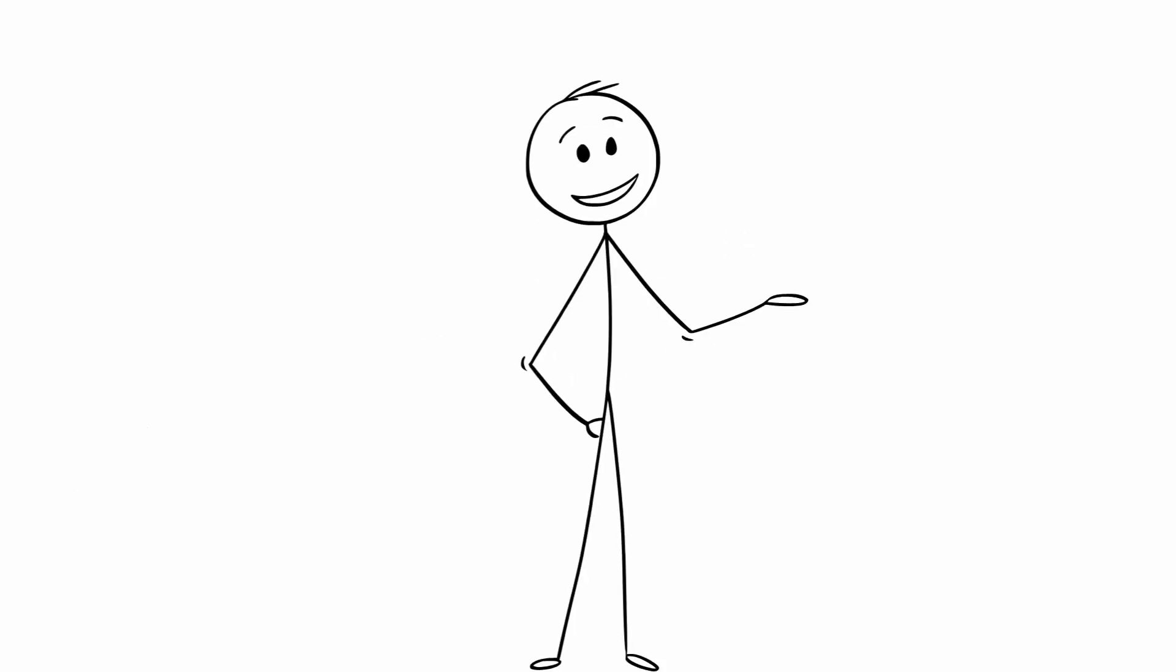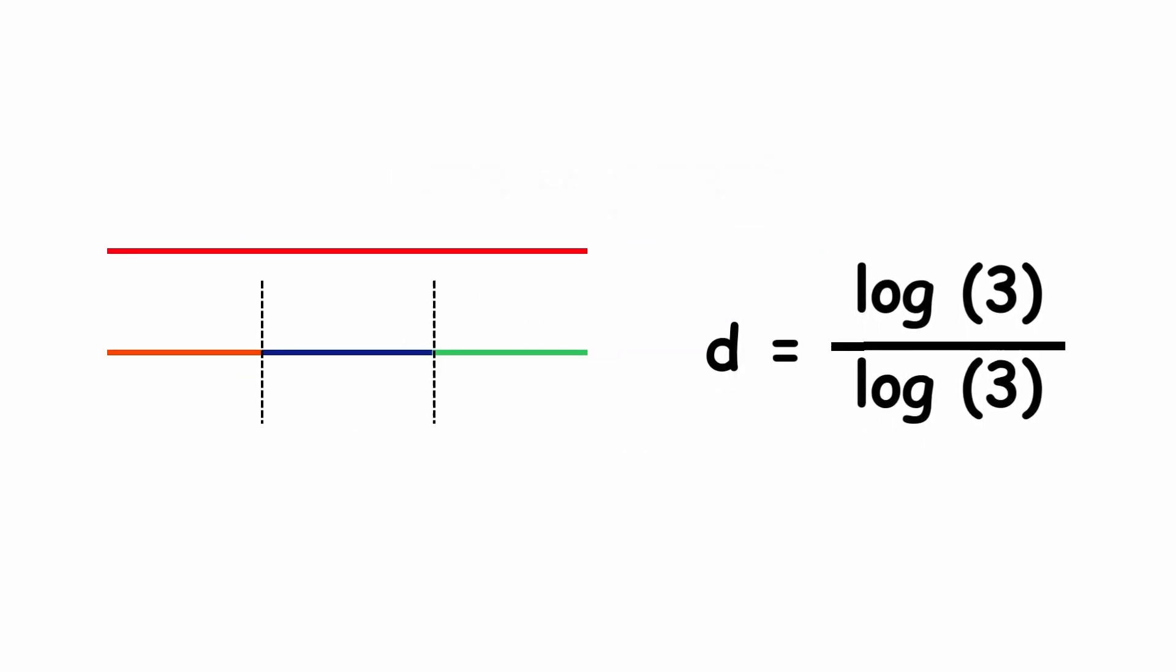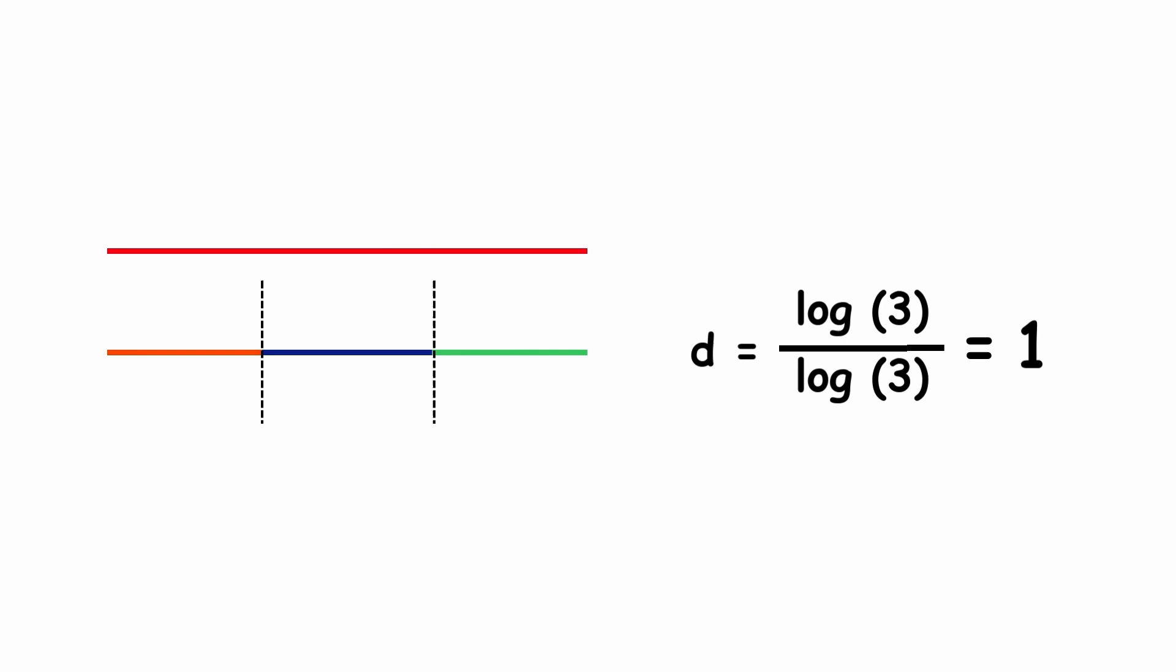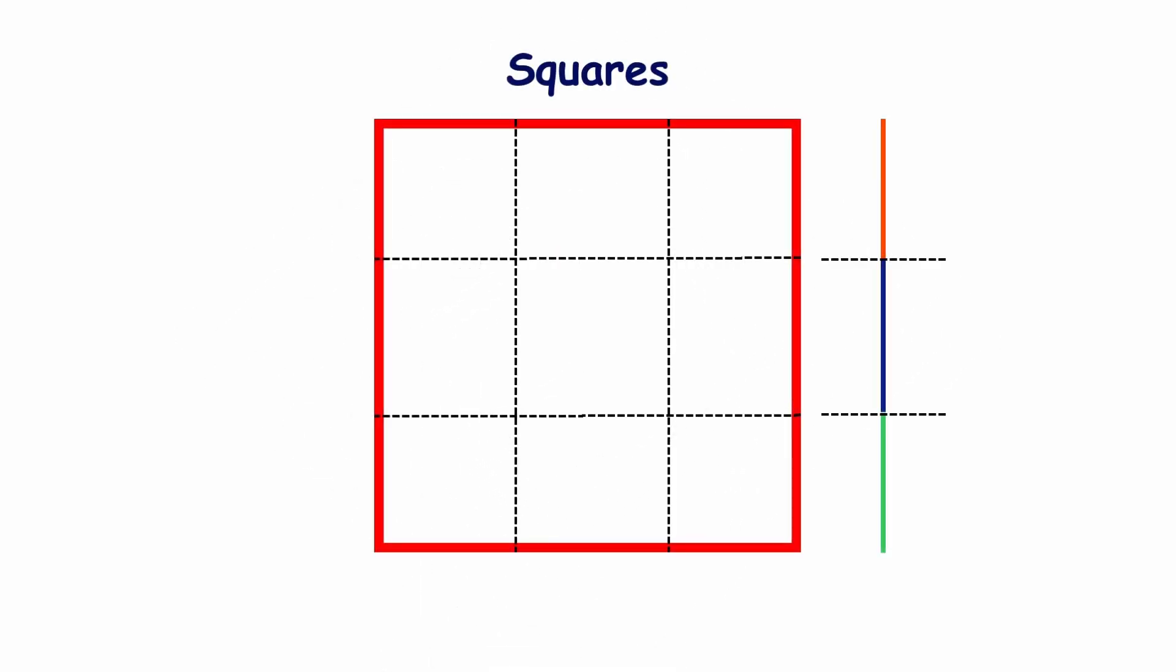In the case of the straight line, it is d equals log of 3 over log of 3 equals 1. Now, let's consider the square. It takes nine segments to fill the space of the original square. That is, d equals log of 9 over log of 3 equals 2.